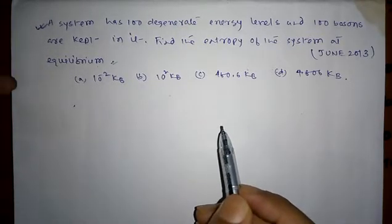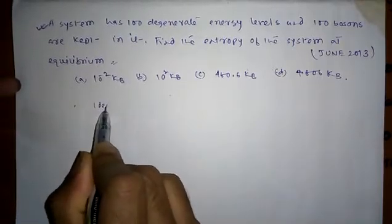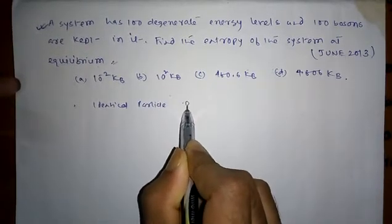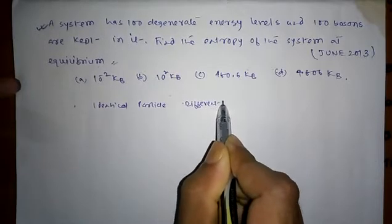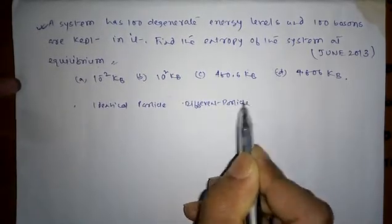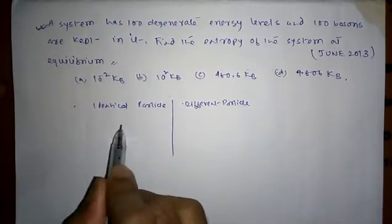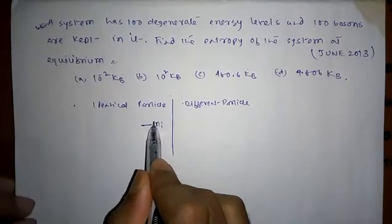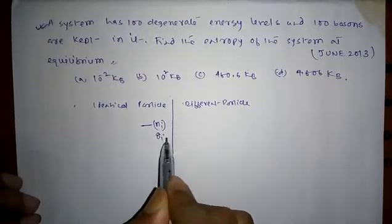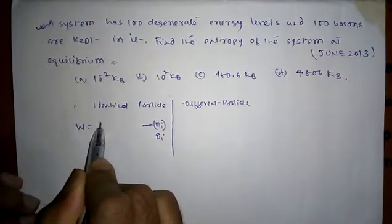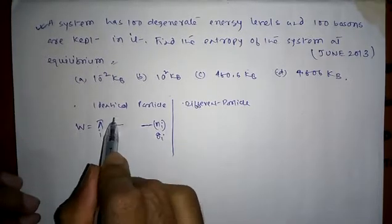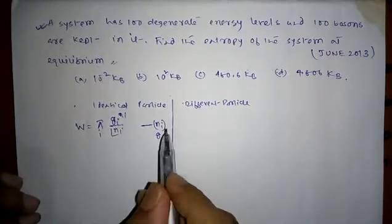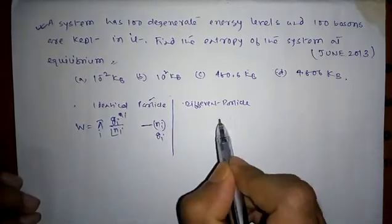For identical particles and different particles — suppose there are 'a' energy levels with n_i number of identical particles and degeneracy of the level is g_i, then thermodynamic probability is given by the summation of g_i to the power n_i divided by factorial of n_i.